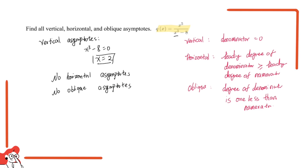So what we can take away from this question is how to find whether each of these three asymptotes — vertical, horizontal, and oblique — occurs. That's all for this question; see you in the next video!